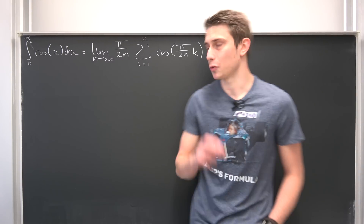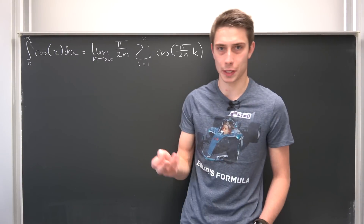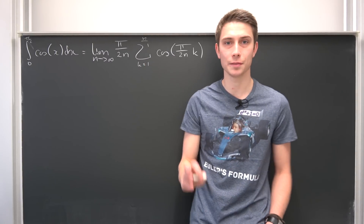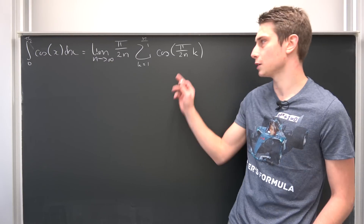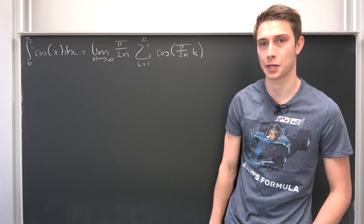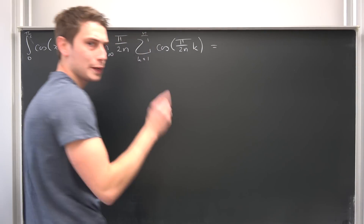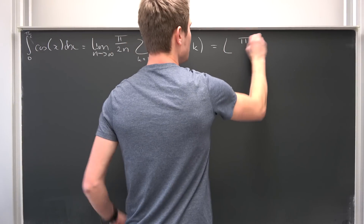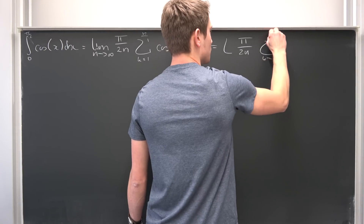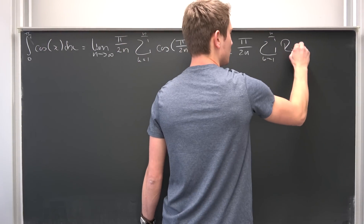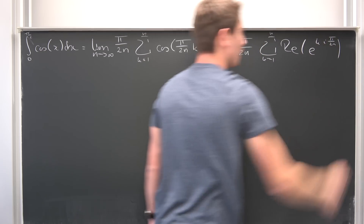How can we go about this problem? We can actually make use of the geometric series on this one. It really doesn't look like it, but trust me, we can deal with this using the geometric series. So at first I would like to consider the cosine as just the real part of the complex exponential function. I'm going to refer to this limit as just capital L because it's easier to write.